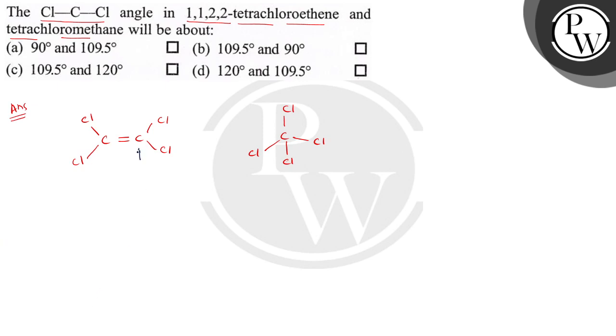Now if you see the hybridization of carbon here, the hybridization of this carbon is sp2, and here it is also sp2. And this carbon is sp3 hybridized. So due to sp2 hybridization, the geometry will be trigonal planar and this angle is 120 degrees. Here, sp3 hybridization and geometry is tetrahedral, so the bond angle is 109.5 degrees.